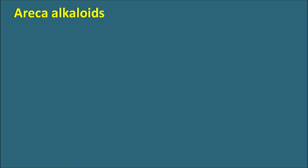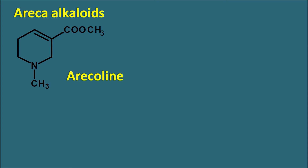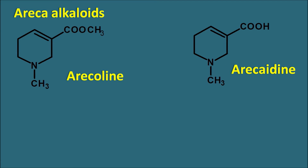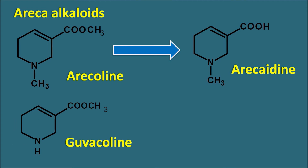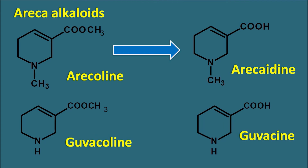Areca alkaloids also contain a modified piperidine nucleus. Arecoline has a piperidine ring with one double bond and an ester group; arecaidine is similar but has a free carboxylic acid instead — so hydrolysis of arecoline gives arecaidine. Guvacoline is similar to arecoline but lacks the methyl group on the piperidine nitrogen; its hydrolysis product is guvacine, which also has a free carboxylic acid. Areca alkaloids are mainly used as respiratory stimulants.